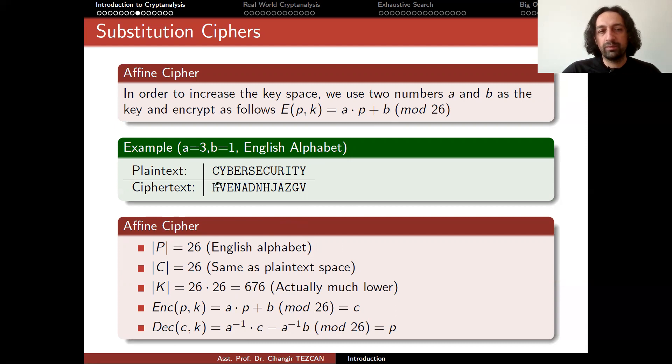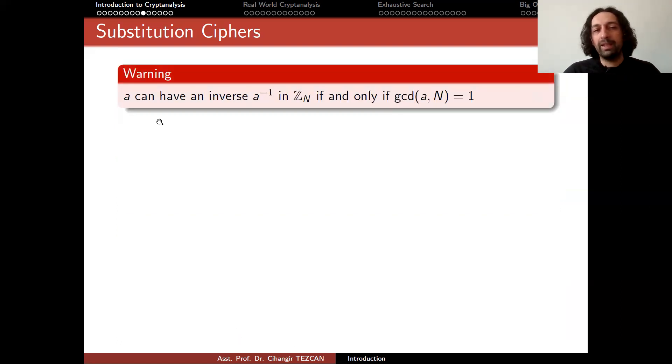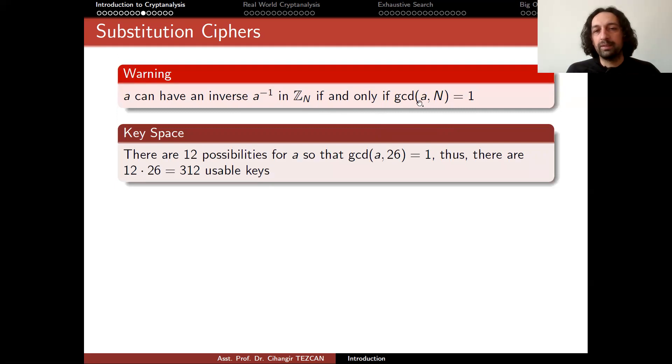Let's see how we decrypt the message when we receive this ciphertext. We again convert them into the integers. And we perform this operation a inverse times c minus a inverse b modulo 26, which will give you the p. If you're not familiar with modular arithmetic, a inverse means the number when you multiply with a, it is equivalent to 1 modulo 26. So the decrypting person who knows a and b also knows a inverse and performs this operation. So question now is, does every number have an inverse in modular arithmetic? And the answer is no, because a can have an inverse in Z_n, in our case Z_26, if and only if the greatest common divisor of a and n equals to 1.